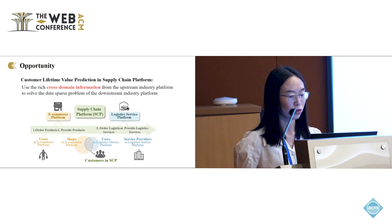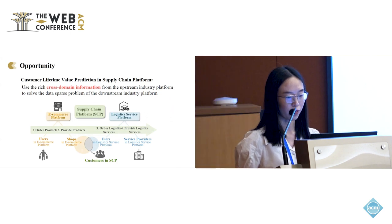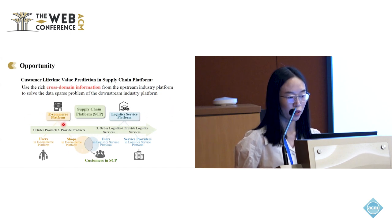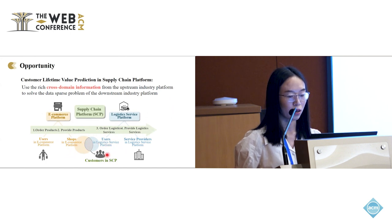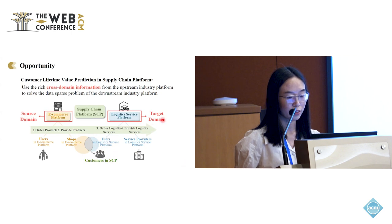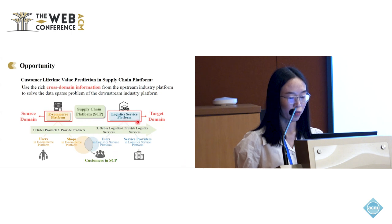Let me introduce a typical workflow of a supply chain platform. It comprises two linked platforms: an e-commerce platform and a logistic service platform. The overlap between the e-commerce platform shoppers and the logistic service platform users represents the supply chain platform customers. We can take the e-commerce platform as a source domain and the logistic service platform as a target domain, leveraging cross-domain information to enhance customer lifetime value prediction on the logistic service platform.